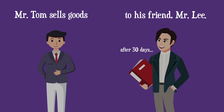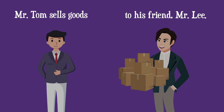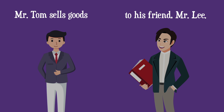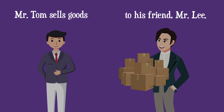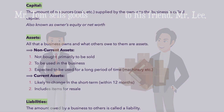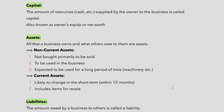The second part of the assets definition is what others owe to you. For example, Mr. Tom sells goods to his friend Mr. Lee, who agrees to pay after 30 days. When the goods are delivered and Mr. Lee hasn't paid yet, Mr. Tom's asset is the money owed by Mr. Lee. This is also known as trade receivables or accounts receivables, and Mr. Lee is his debtor.